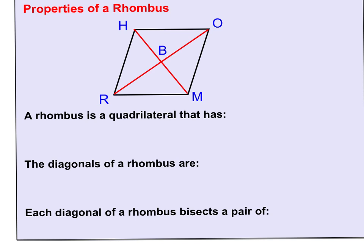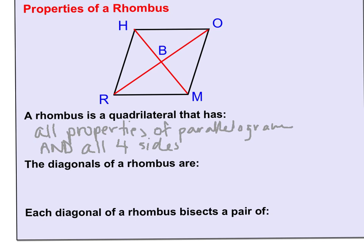So we're going to start here writing a rhombus is a quadrilateral that has all properties of a parallelogram and all four sides are congruent.